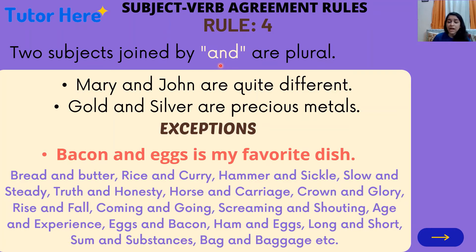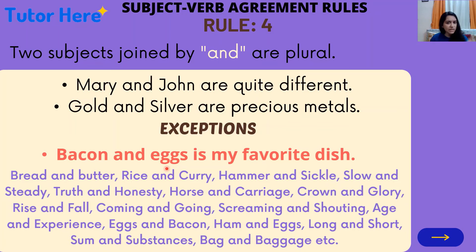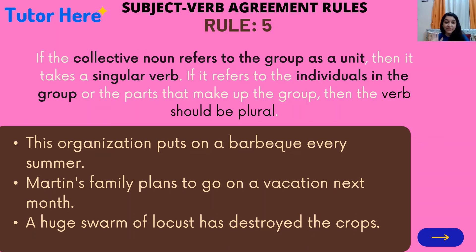Rule number four: whenever two subjects are joined by the conjunction 'and,' they are considered plural subjects, so we use plural verb forms. For example: 'Mary and John are quite different' and 'Gold and silver are precious metals.' However, there are exceptions — 'Bacon and eggs is my favorite dish' uses the singular verb 'is' because bacon and eggs is considered a single subject. Other such exceptions include bread and butter, rice and curry, hammer and sickle, slow and steady, and truth and honesty — when used in a sentence, these take a singular verb form.